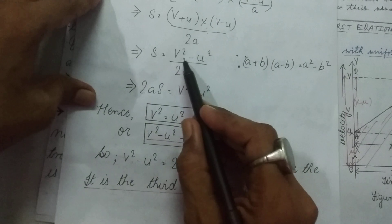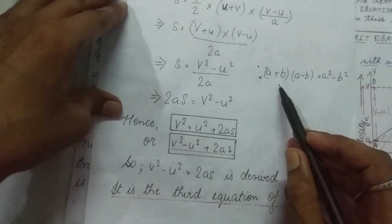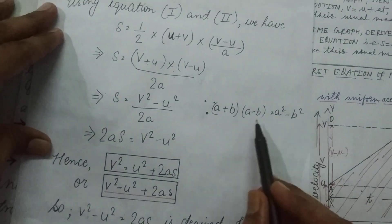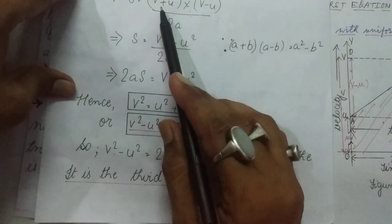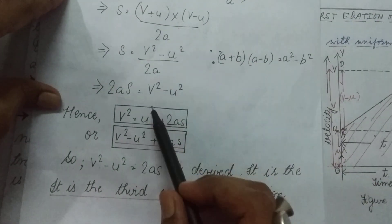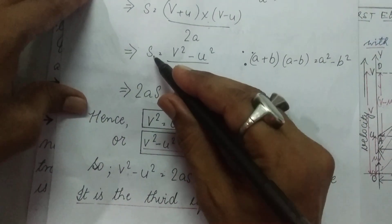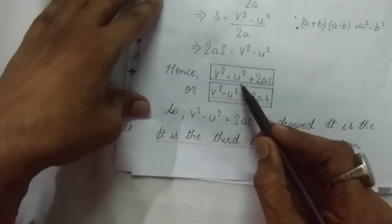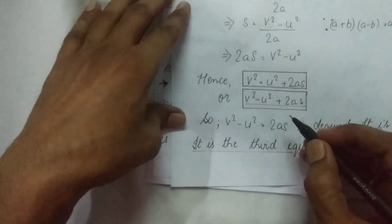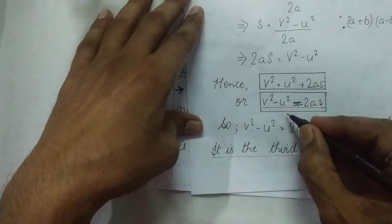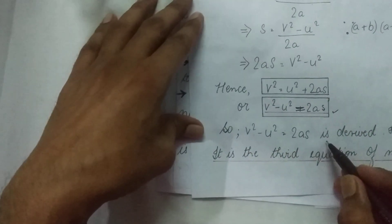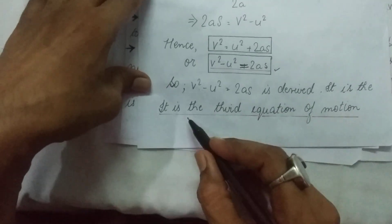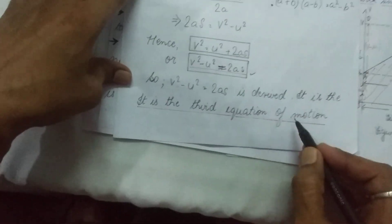So S equals (v² - u²) / 2a. We know that (A + B)(A - B) = A² - B², so v² - u² = (v + u)(v - u). Rearranging, 2aS = v² - u², which gives v² = u² + 2as. Therefore v² - u² = 2as. This is the third equation of motion.